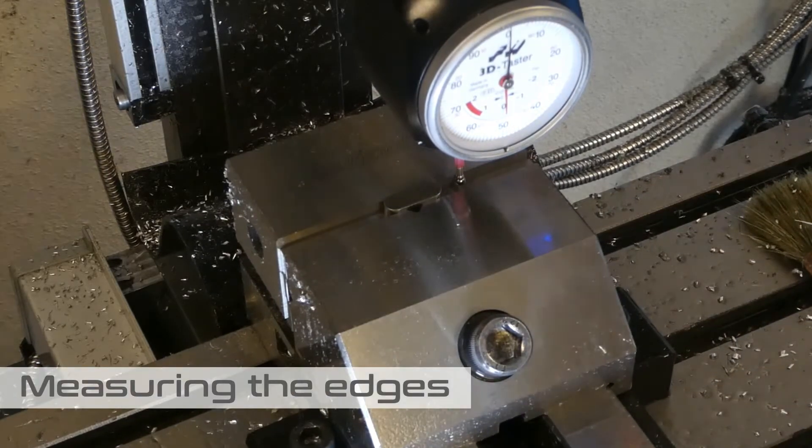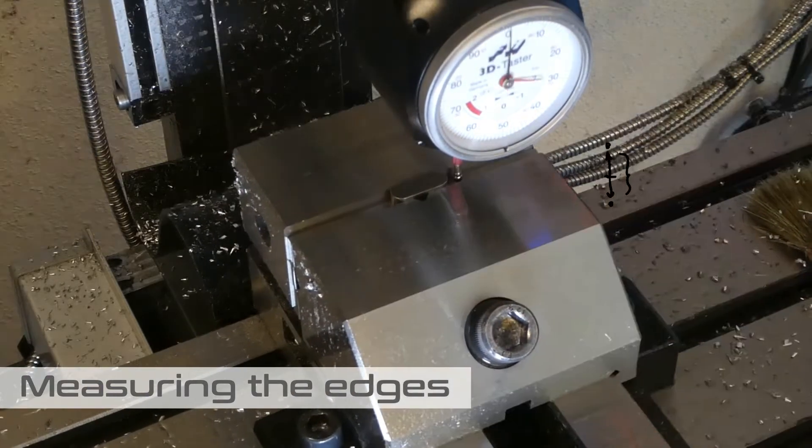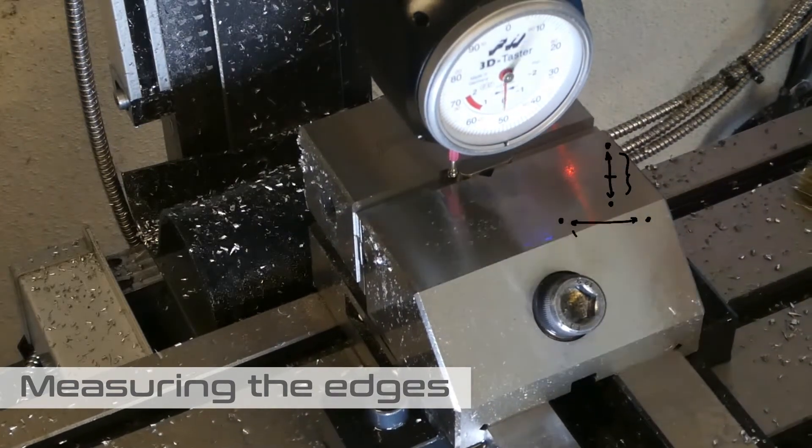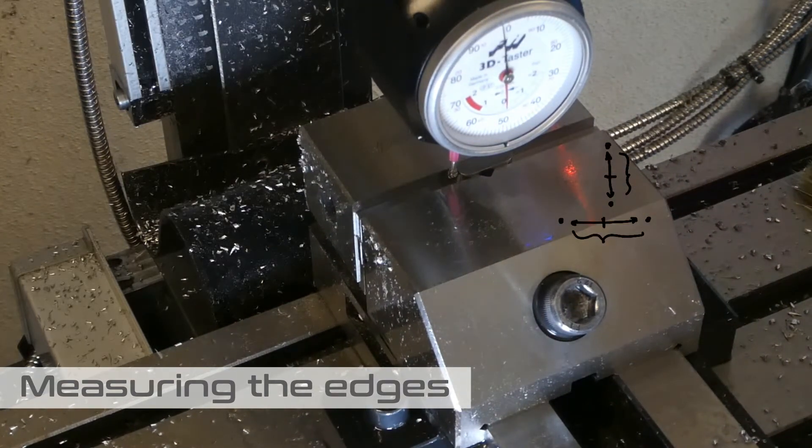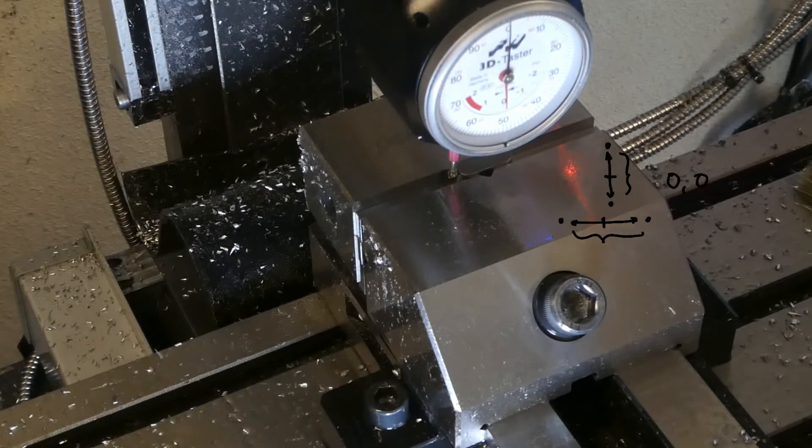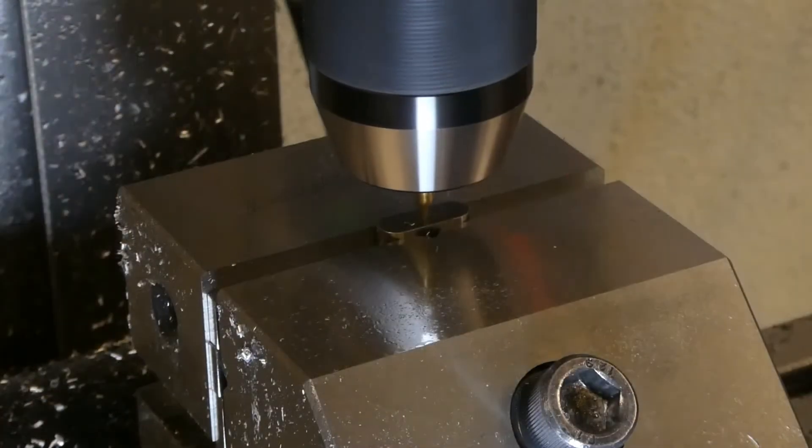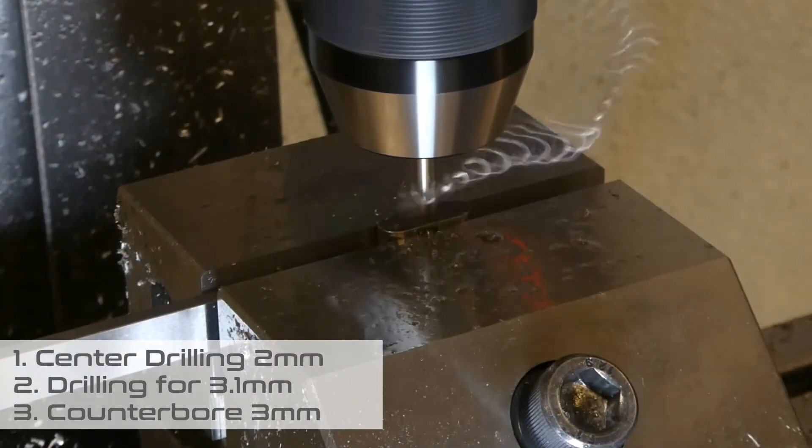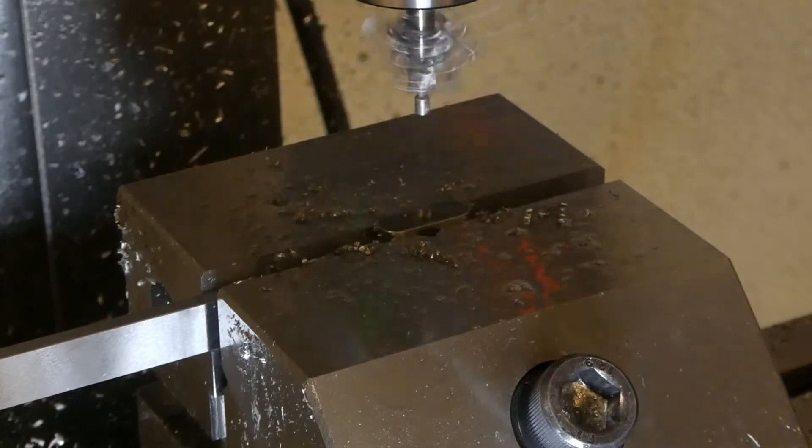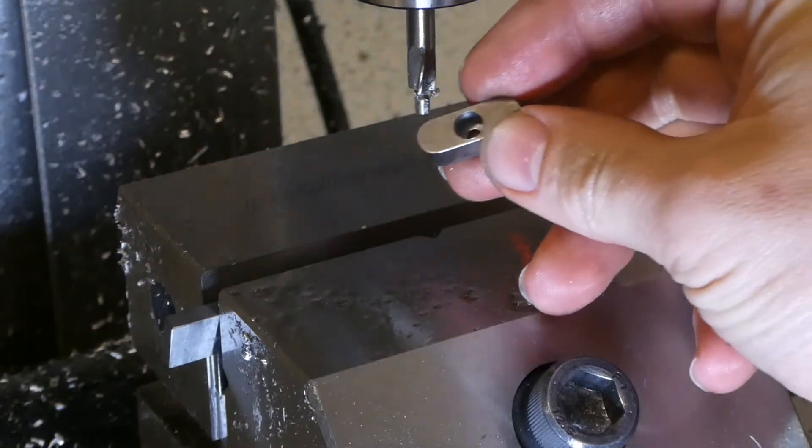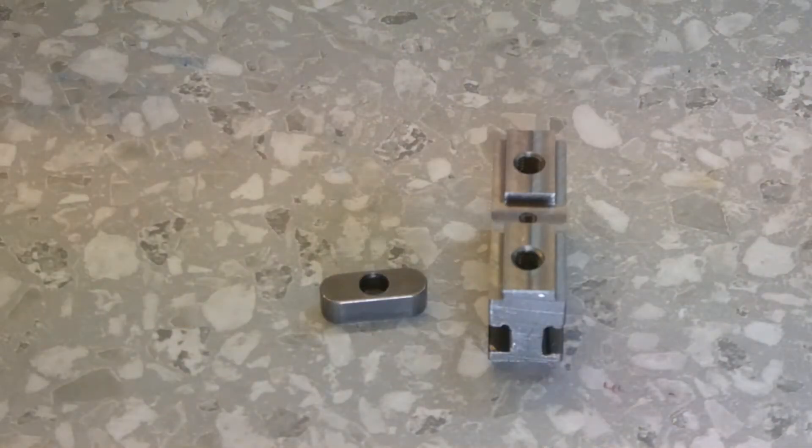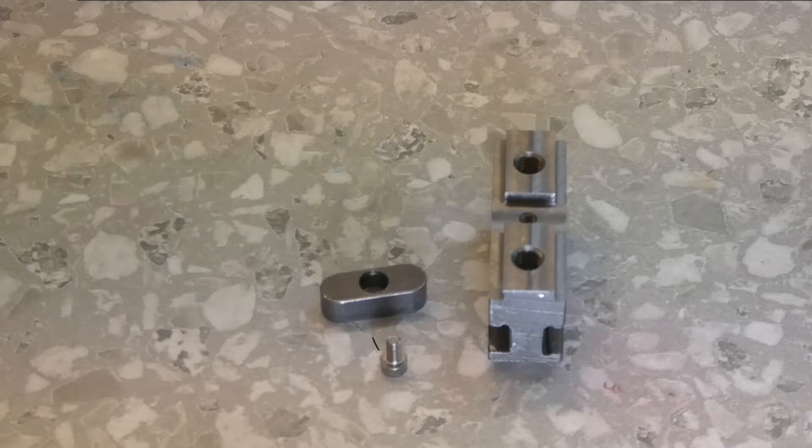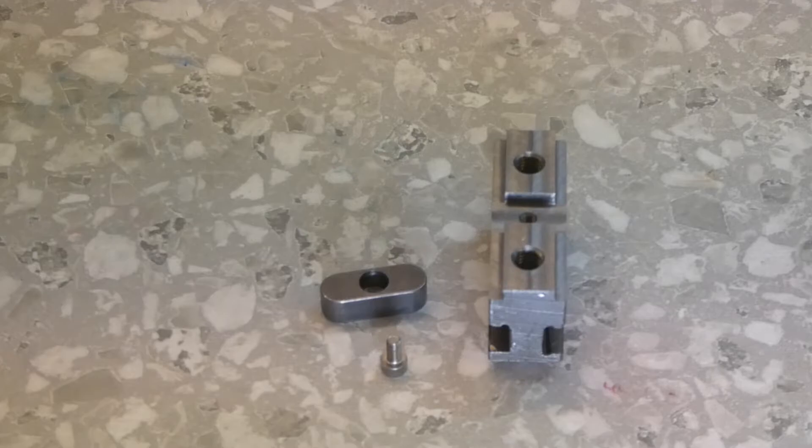And we will do the hole on the key with the center drill, the drill of 3.1mm and the counter bore. I have used 3.1mm instead of 3 because I prefer to have some gap in order to be able to move a bit the screw in case it's needed because of the tolerance. I am taking the edge as well here with the hammer in order to be able to know the exactly center of the part. As I told you, you can use other edge finders, it's not a problem. And the same process, centering, drilling, and doing this counter bore with this tool which is quite good. I bought in Aliexpress. And you can see the result, it's perfect.